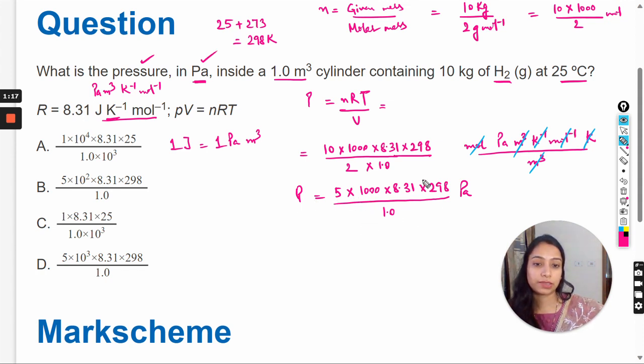So this much pressure in pascal will be the answer. So here you can see 5, and here 1000. We can write this as 10 raised to the power 3 multiply 8.31 multiply 298 divide by 1.0.